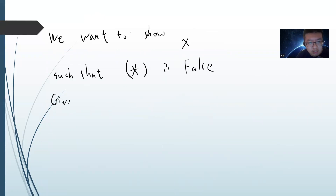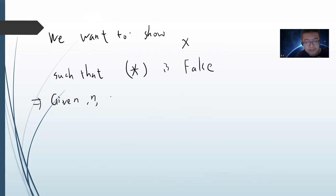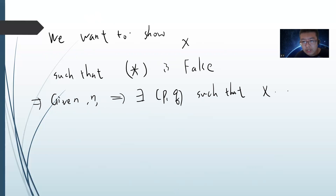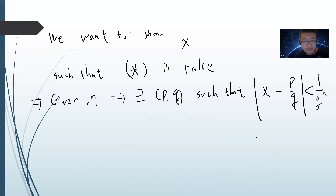Basically, the theorem being false means: given any n, we can always find p/q such that |x - p/q| < 1/q^n, which violates the lower bound required for algebraic numbers.